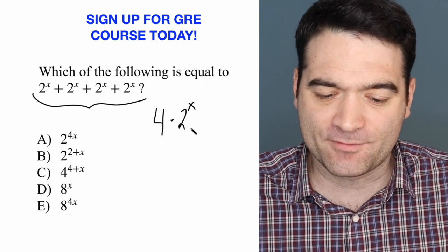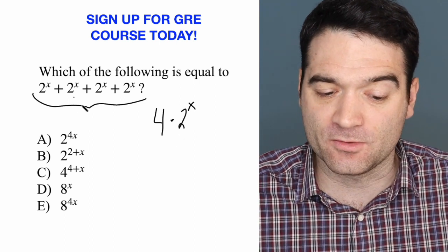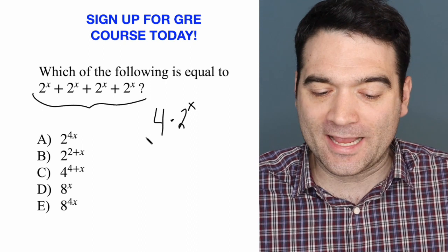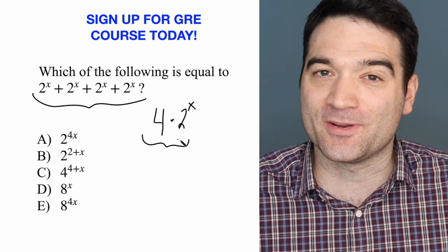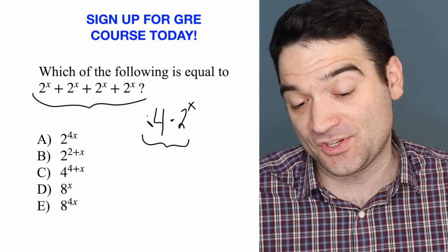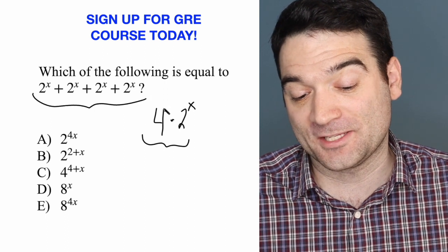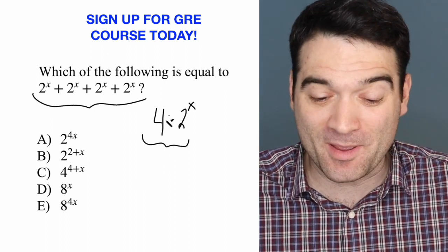Let that sink in for a second, right? I have 2 to the x 4 times. Okay, well, I can't use any exponent rules here yet, but if I were to say write this as a base of 2, then we might be able to do something.